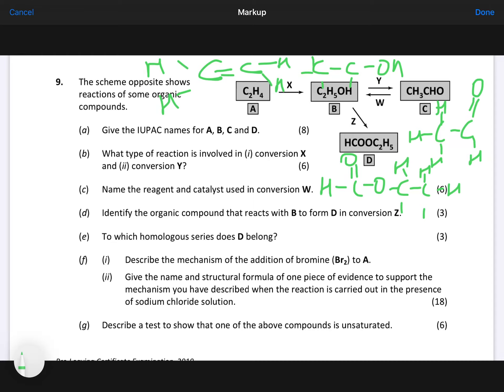Then you go to name them. So you can say the first one is ethene. You can see your double bond here, your CC double bond. OH is the functional group for B. So B is ethanol.